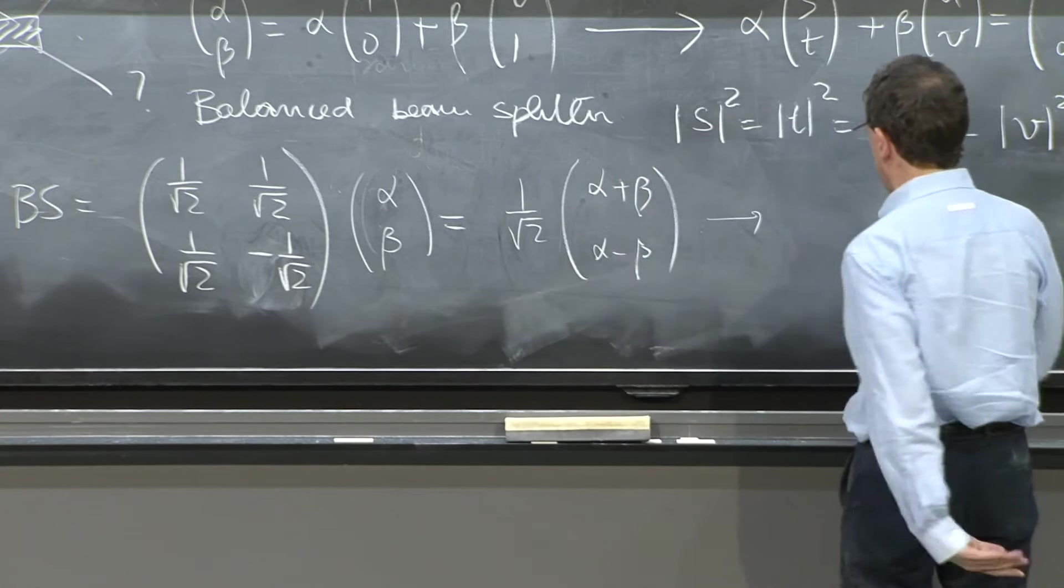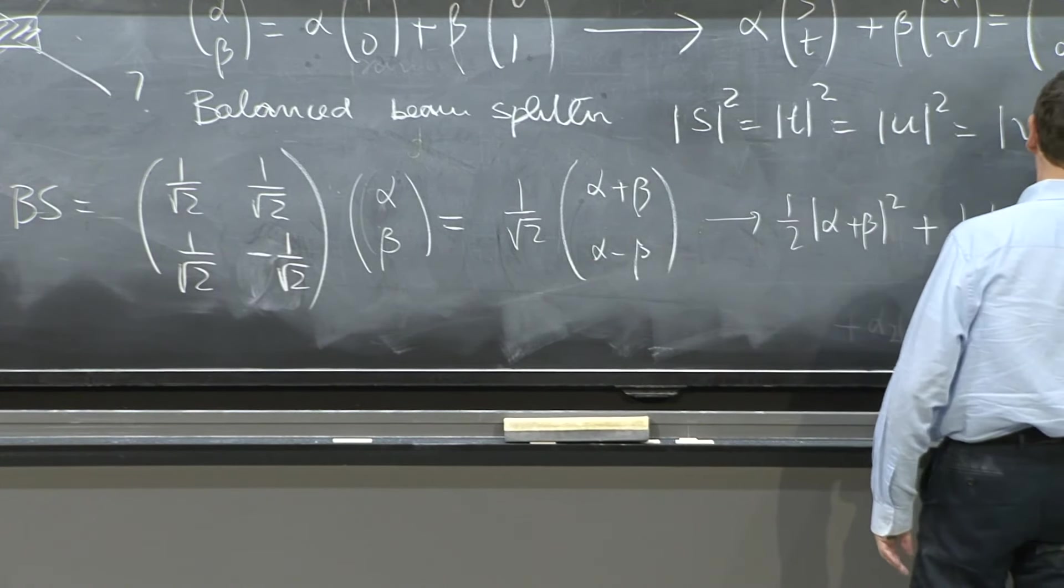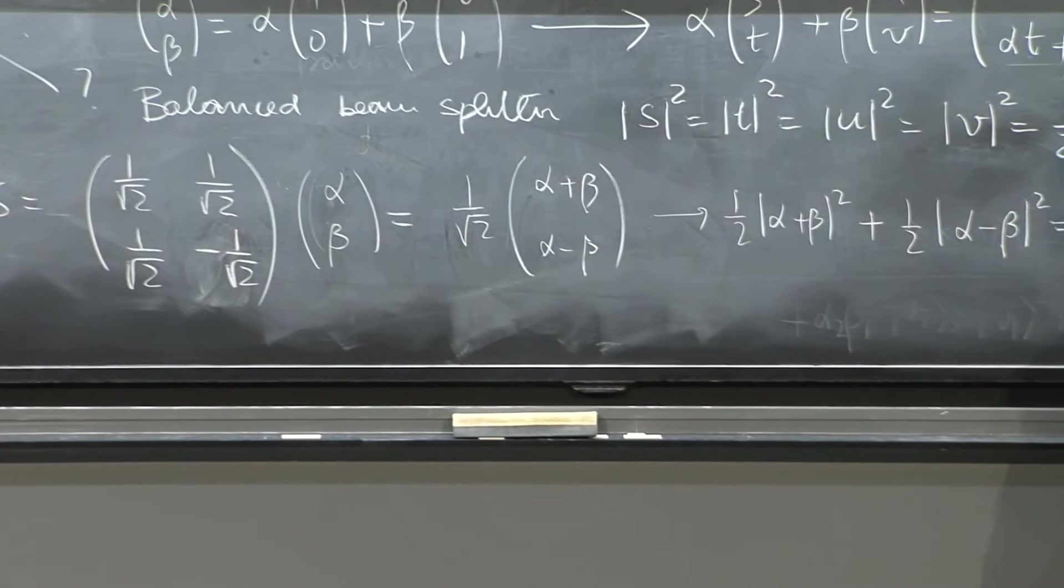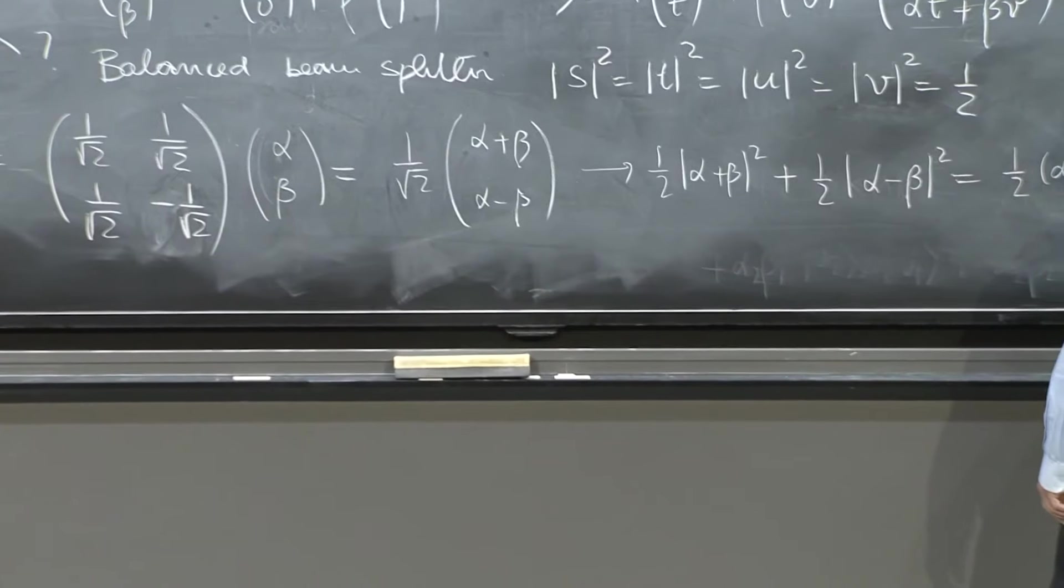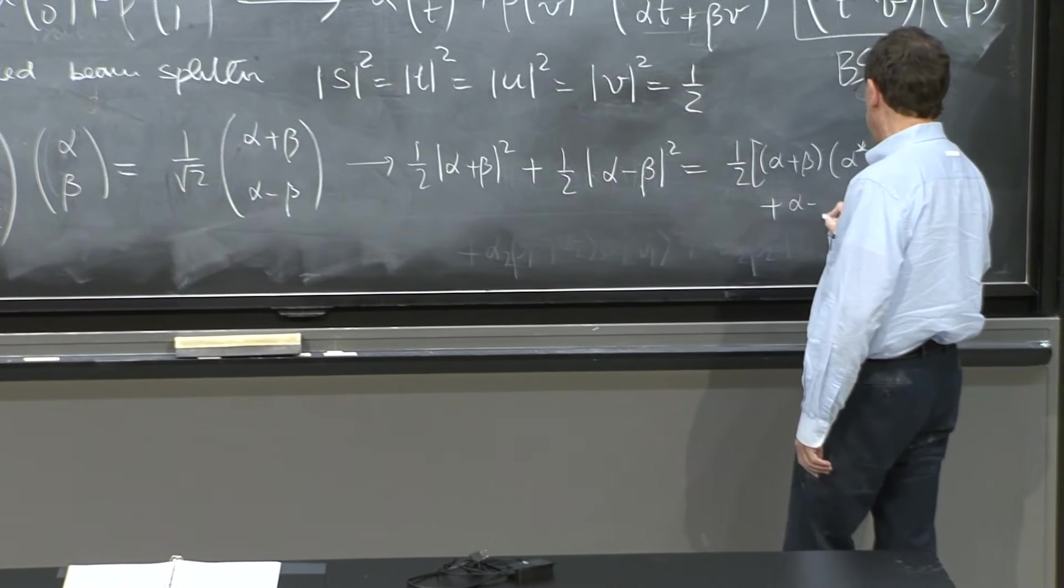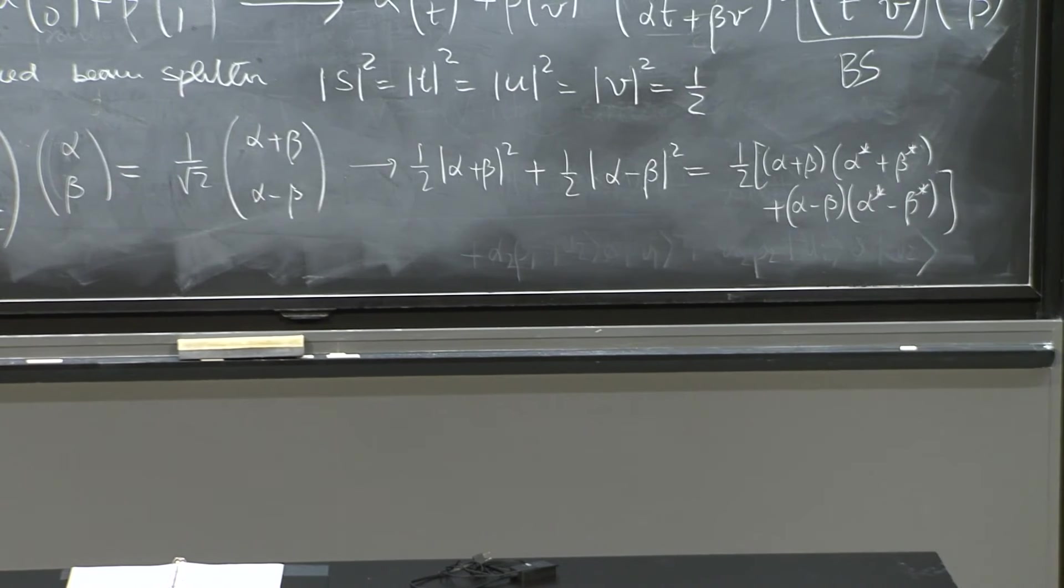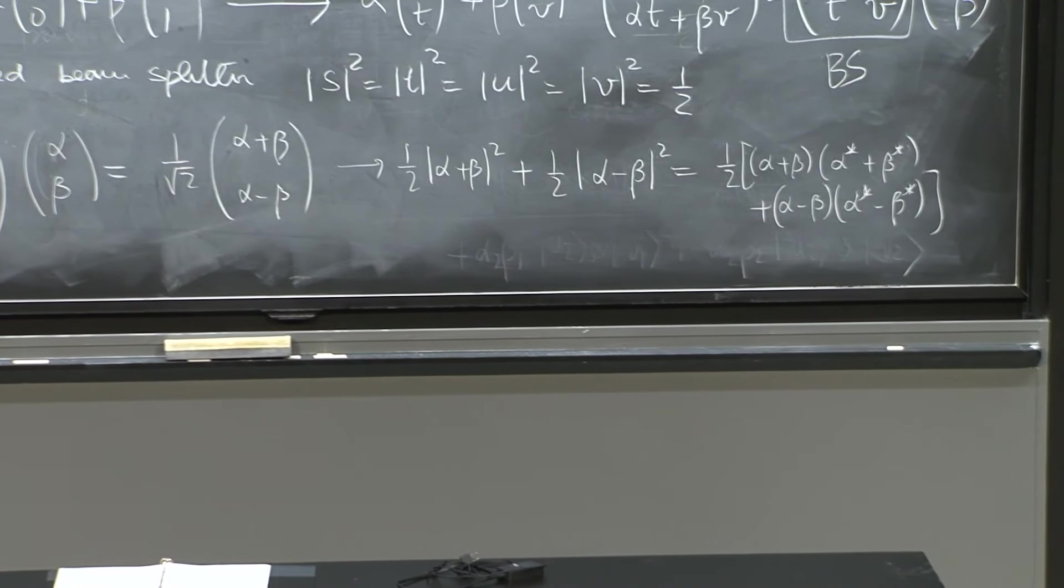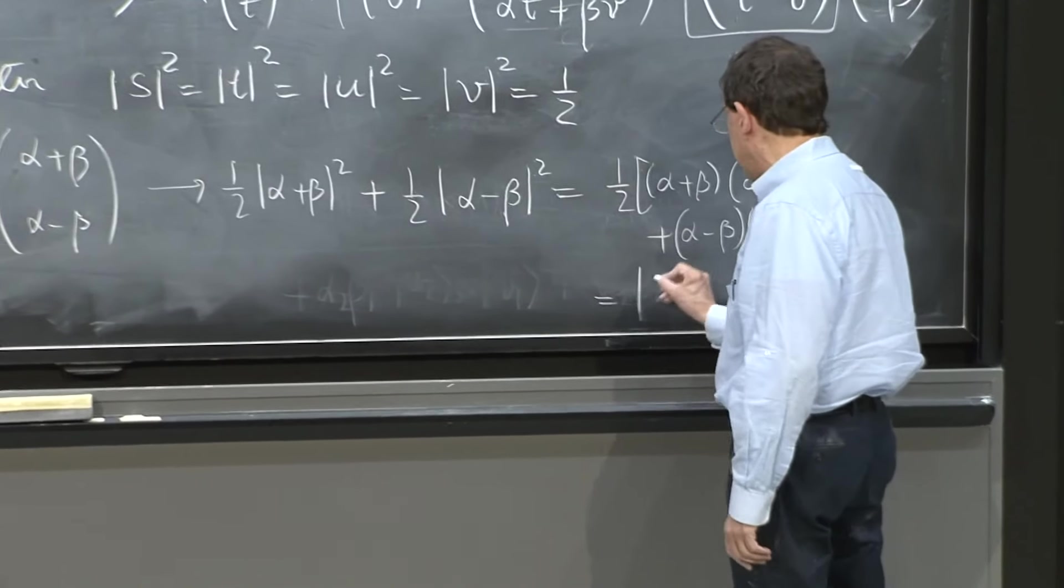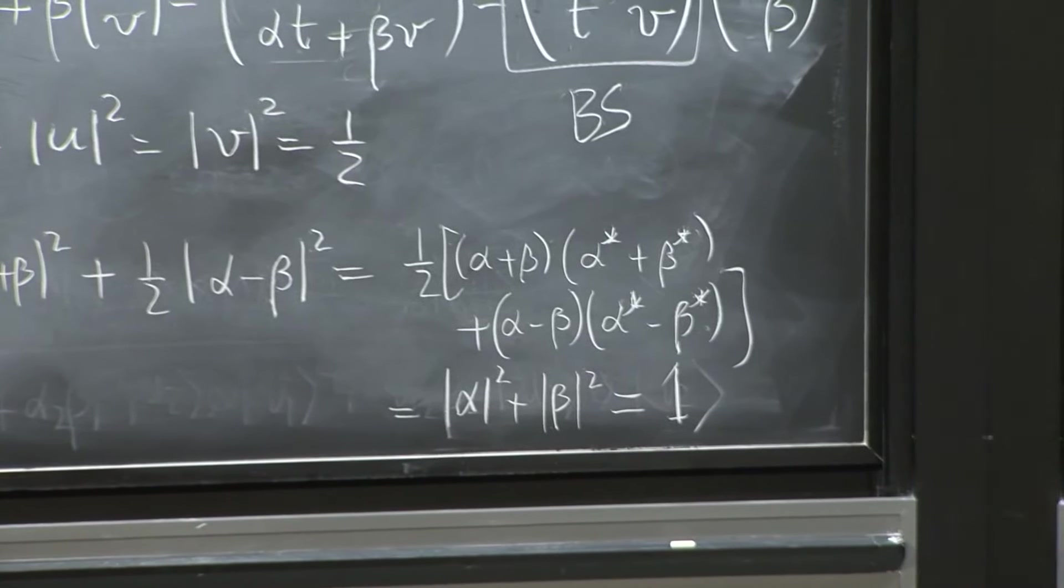So I must do norm of this one squared. So it's 1/2 |alpha + beta|^2 + 1/2 |alpha - beta|^2. Well, what is this? Let me go a little slow for a second. 1/2 (alpha + beta)(alpha* + beta*) + (alpha - beta)(alpha* - beta*). Well, the cross terms vanish. And the alpha*alpha, alpha*alpha, beta*beta, beta*beta add. So you do get |alpha|^2 + |beta|^2. And that's 1 by assumption because you started with a photon. So this works. This is a good beam splitter matrix.